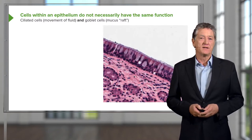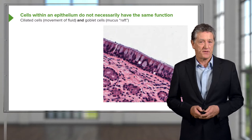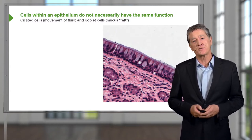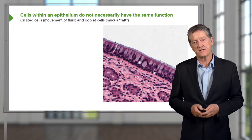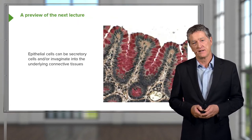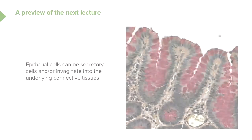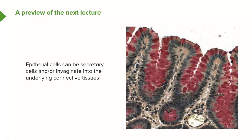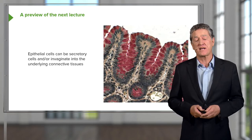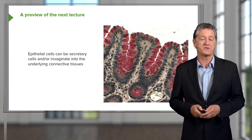Some epithelia contain different sorts of cells with different functions. In some cases epithelial cells invaginate or grow down into the underlying connective tissue or lamina propria, becoming specialised secretory cells or glandular tissue. This will be the subject of a later lecture.